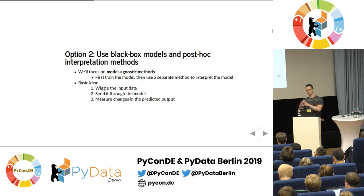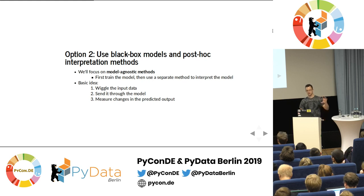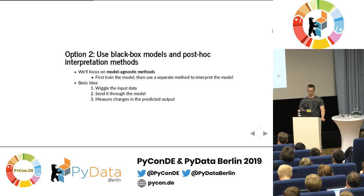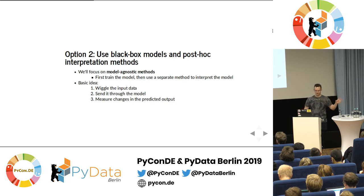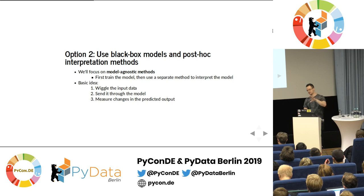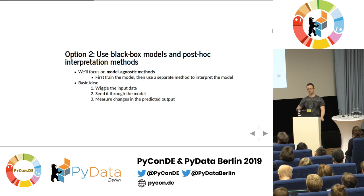What we'll be looking at — and what is generally a good idea — is to use a model agnostic method. This means the interpretability method is not coupled to the machine learning model; they are two entirely different steps. You can always swap out your random forest for an XGBoost algorithm, and also swap out the interpretability method whenever you want. Generally the idea is to keep your model fixed and toy around with your input data — for example, shuffle one column and send it through the model again, then measure changes in the output.